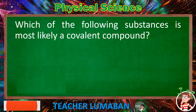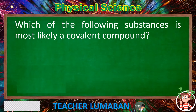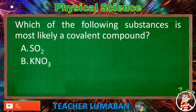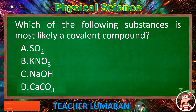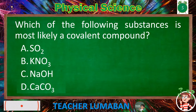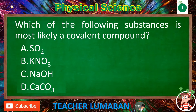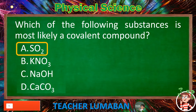Which of the following substances is most likely a covalent compound? Letter A: SO₂. Letter B: NO₃. Letter C: NaOH. Letter D: CaCO₃. The correct answer is Letter A: SO₂. SO₂ is the substance most likely to be a covalent compound.